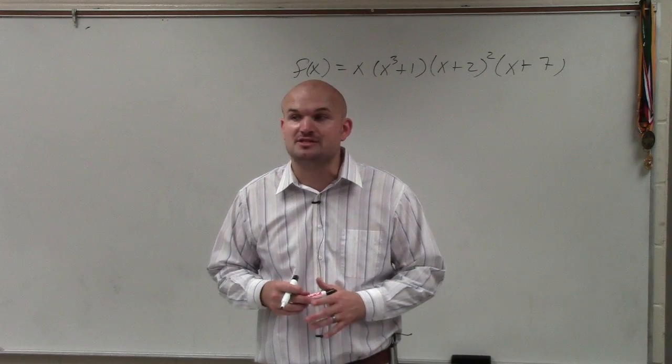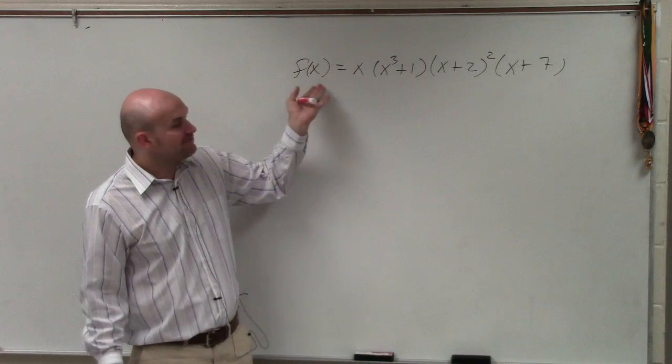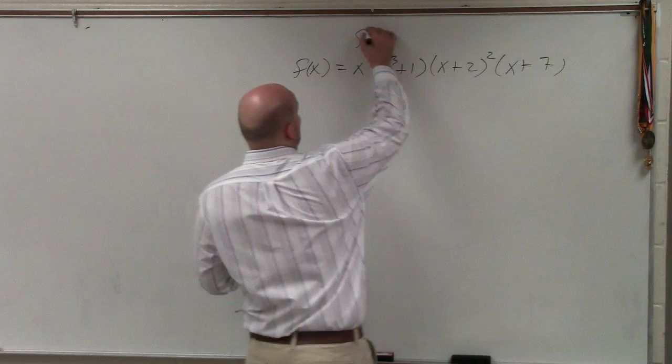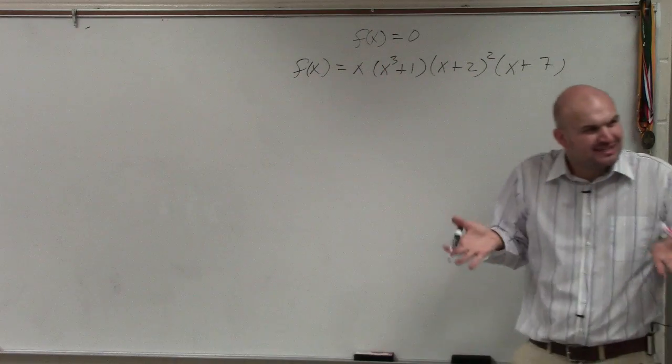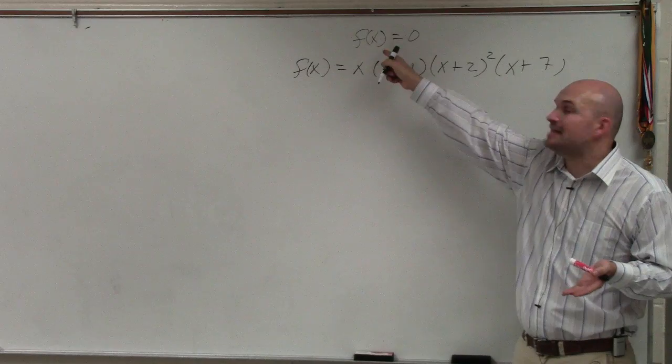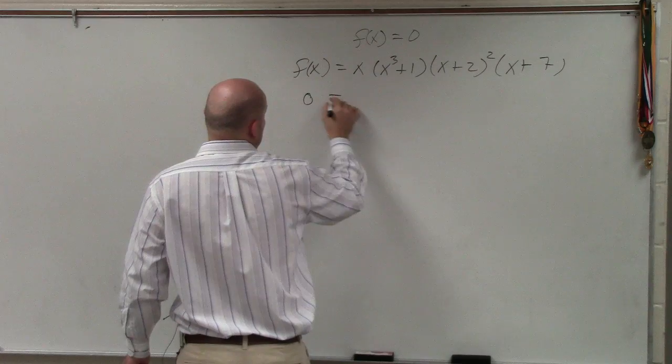So basically what I want you guys to practice, what we're going to be going over today, is when you have a factored form, to find the zeros. Basically what the zeros is asking us is find when f(x) is equal to 0. That's what finding the zeros is. Find the values of x that make f(x) equal to 0. So the first thing you're going to do is replace f(x) with 0.